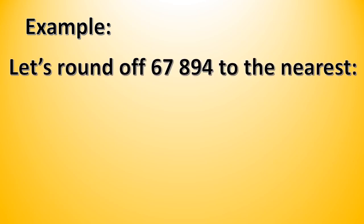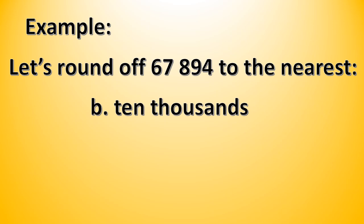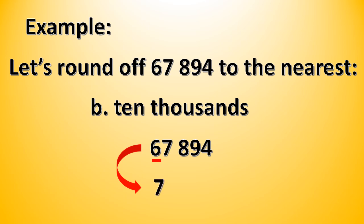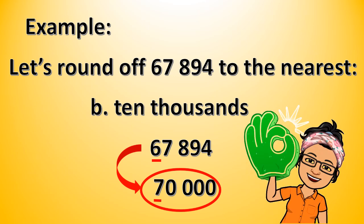Another example: let's round off 67,894 to the nearest ten thousands. What is the digit in the place value to be rounded off? Very good, it is 6. And what is the digit to its right? It is 7. Since the digit to the right is from 5 to 9, we round up. We add 1, and 6 will become 7. All remaining digits will be changed to 0. So 67,894 rounded off to the nearest ten thousands is 70,000. Good job!